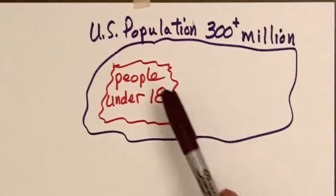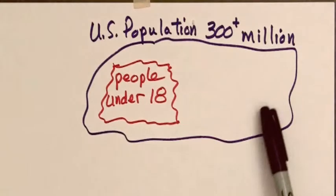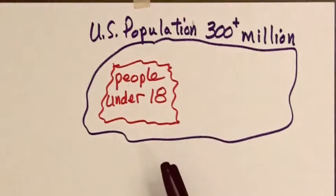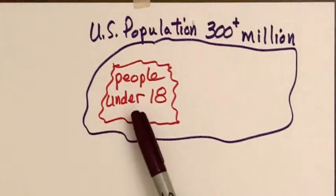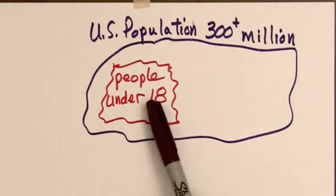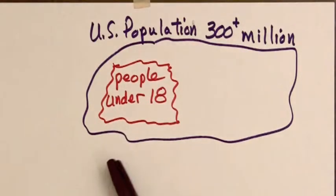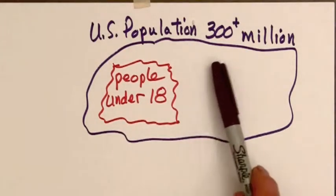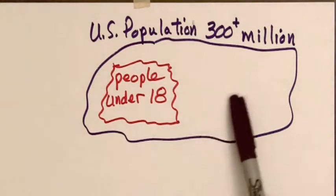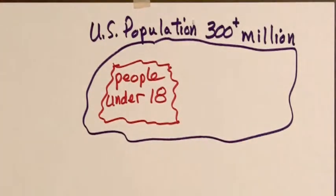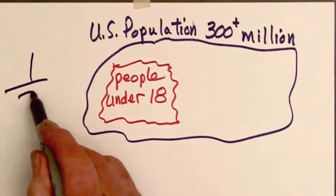There are over 300 million people in the United States represented by this region, and the ratio of the number of people under 18 years old, represented by the red region, to the number of people 18 and over, represented by the region out here, is 1 to 3, or the fraction 1 third.